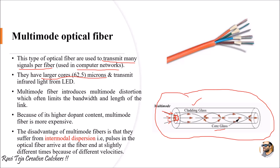Multi-mode optical fibers experience multi-mode distortions. A major disadvantage is that as there are multiple signals entering the fiber, there are distortions and the bandwidth is limited. The length is also limited because multiple signals move with multiple velocities and frequencies. Additionally, multi-mode optical fiber is more expensive compared to single mode optical fiber.